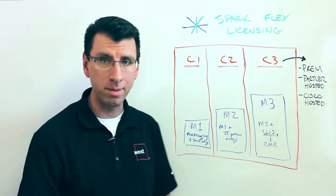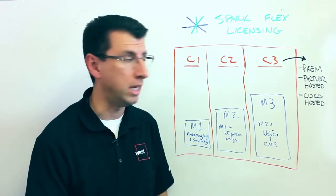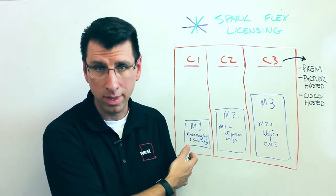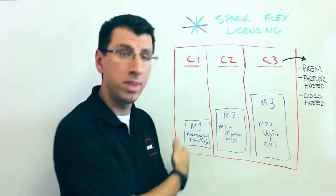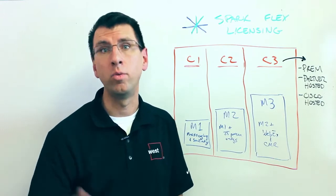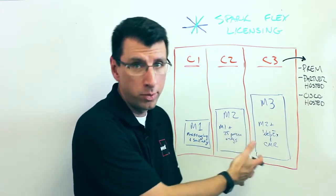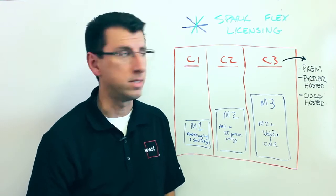M1 is for basic messaging and small meetings, one-on-one or three-person meetings. M2 basically takes everything in M1 and adds in twenty-five person meetings. And then M3 adds everything in M2, but also adds in the full-blown WebEx and CMR experience. So arguably M3 is synonymous with WebEx and CMR.